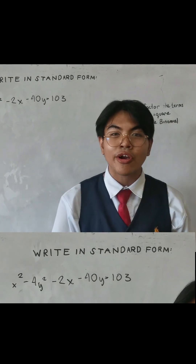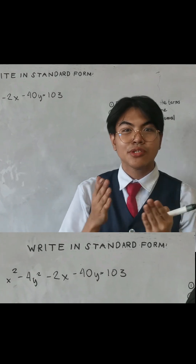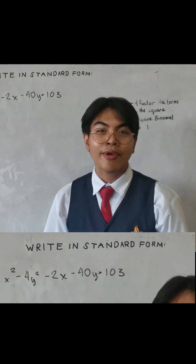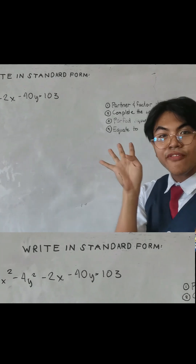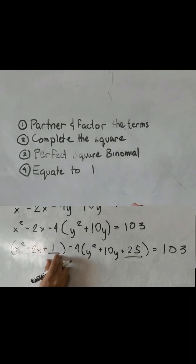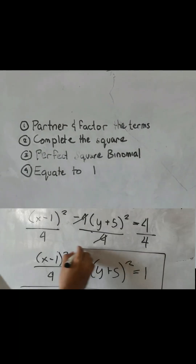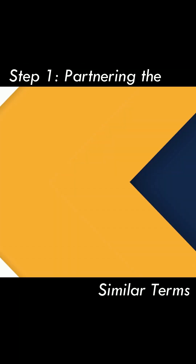In converting general form hyperbolic equations to standard form, we have only four steps: factor the terms, complete the square, perfect square binomial, and equate to one.